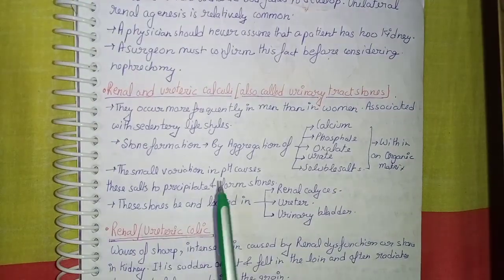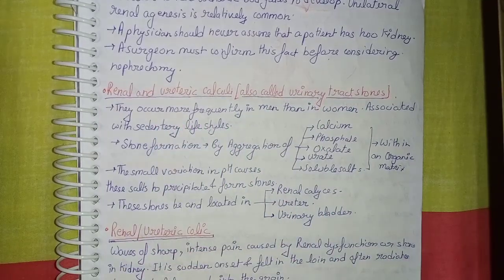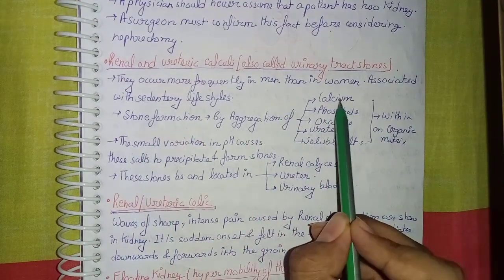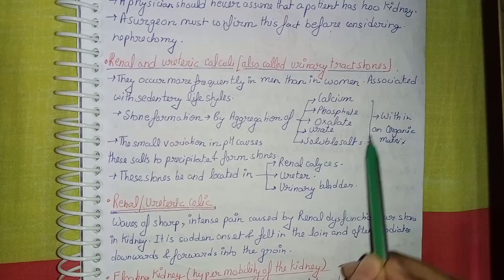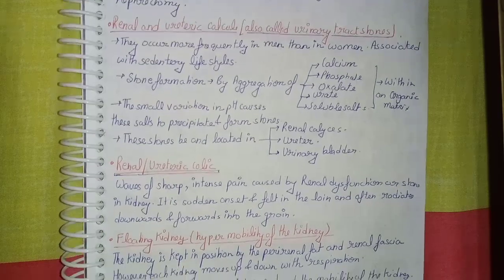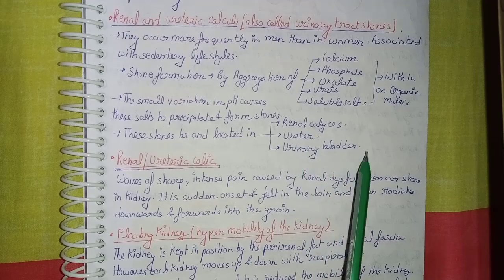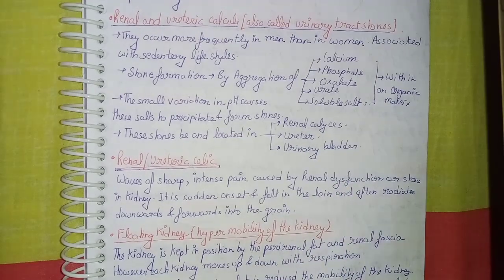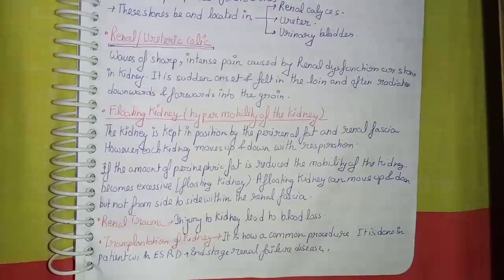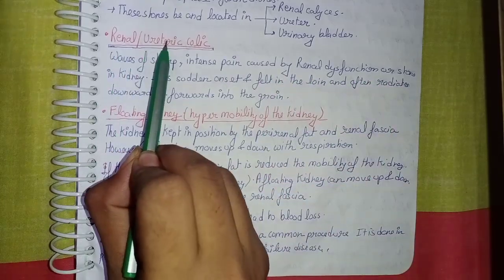Coming to renal and ureteric calculi, also called urinary tract stones: they occur most frequently in men and are associated with a sedentary lifestyle. Stone formation occurs by the excretion of calcium, phosphate, oxalate, urate, and soluble salts within an organic matrix. Small variations in pH cause these salts to precipitate and form stones. These stones can be located in the renal calyx, ureter, or urinary bladder, and Brodel's line is used for the surgical removal of these stones. Renal or ureteric colic refers to waves of sharp, intense pain caused by the obstruction of a stone in the kidney or ureter.